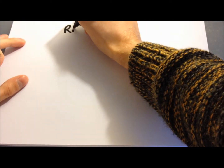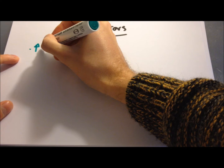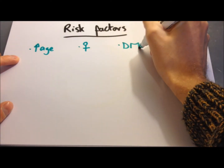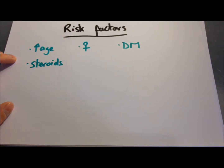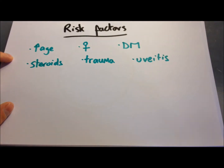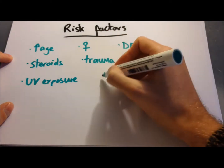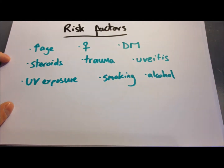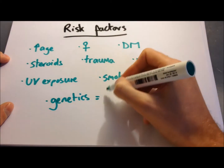There are a number of different risk factors for cataracts. Among them are increasing age — the prevalence goes up with age — being female, diabetes, and steroid use. Trauma and uveitis, which is inflammation of the uveal tract — the iris, ciliary body, and choroid — also increase risk. Exposure to UV light (pilots, for example), smoking, alcohol, and genetics all play a part too, with a heritability of cataracts of around 55%.